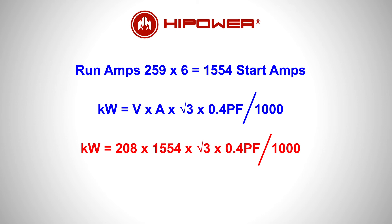Starting power factors are around 0.4 compared to a 0.8 power factor when running. Even with a lower starting power factor, starting kilowatts can average three times the running kilowatt requirement.